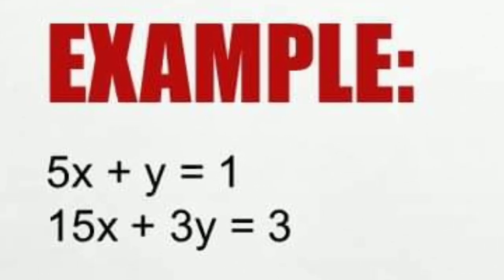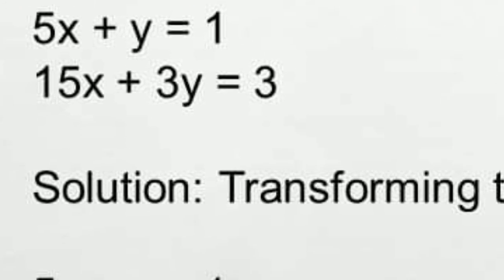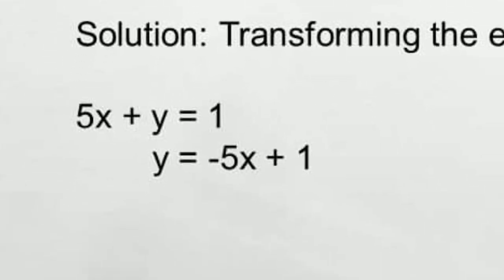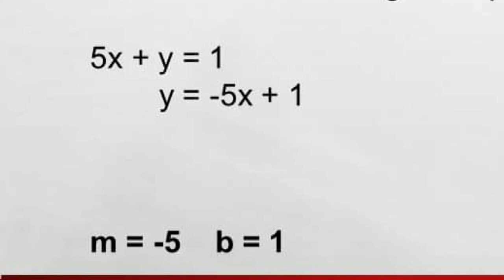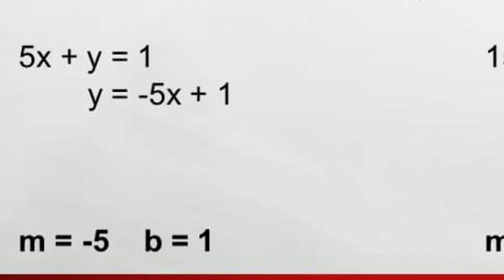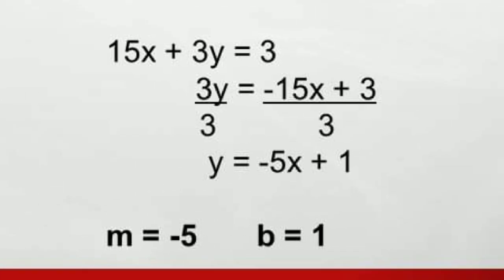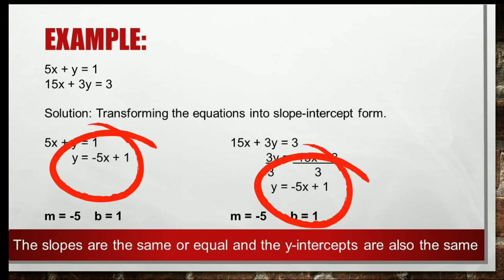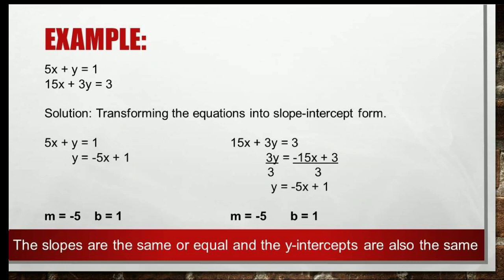Our first example: 5x + y = 1 and 15x + 3y = 3. Transforming the first equation gives y = −5x + 1, with slope −5 and y-intercept 1. For the second equation: 3y = −15x + 3, divide both sides by 3, giving y = −5x + 1. The slope is −5 and the y-intercept is 1. As you can see, both equations are the same — they are equivalent equations. Therefore, equivalent equations form a dependent system.